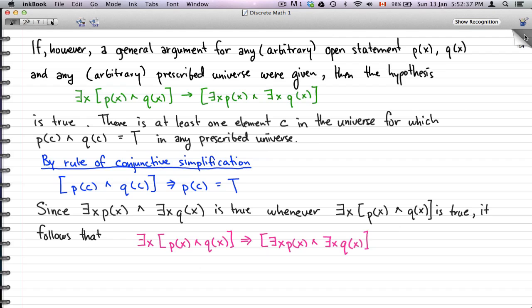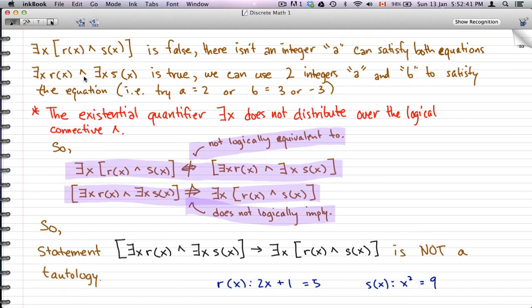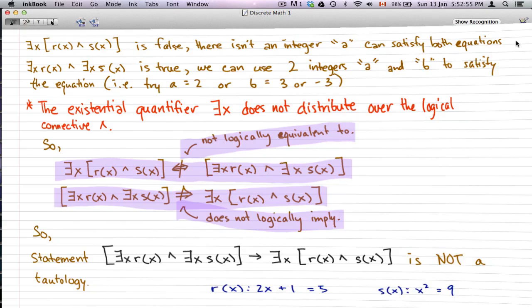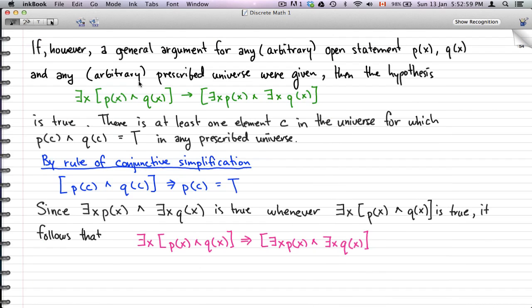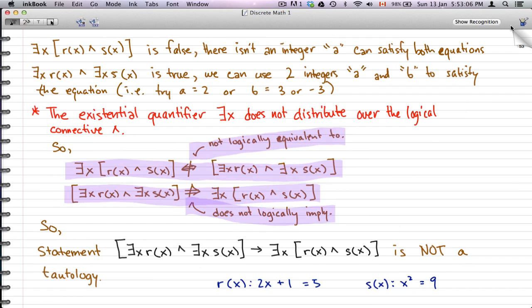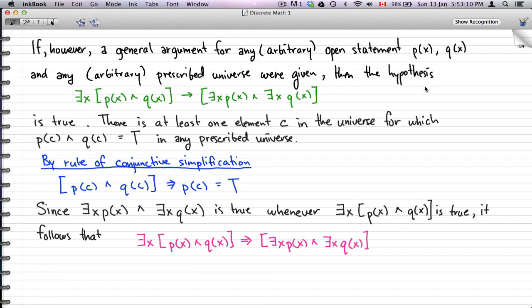What I mean here is that going back to this example, why this didn't work is because of our universe. Given our restriction to that specific universe of integers, these two statements cannot be true and this statement ultimately is not a tautology. But perhaps in some cases where we're just given an arbitrary open statement and some random prescribed universe, this hypothesis might be true.